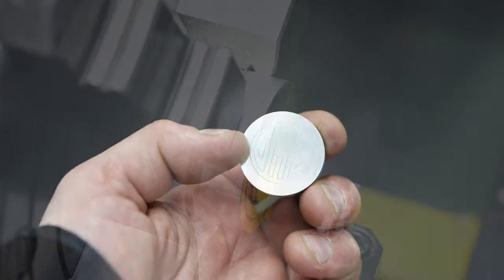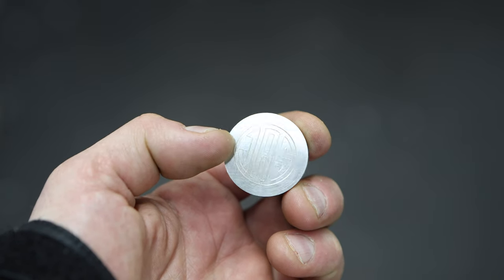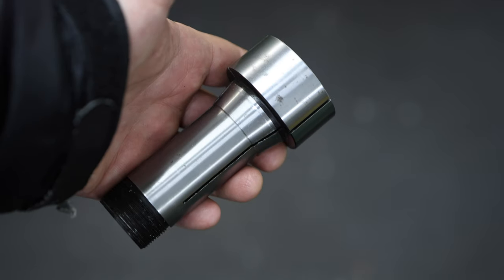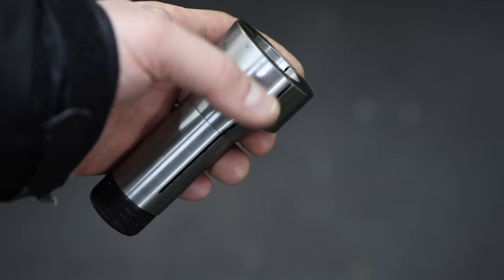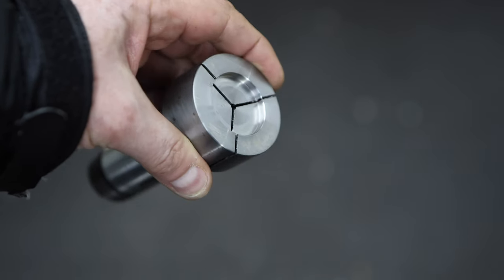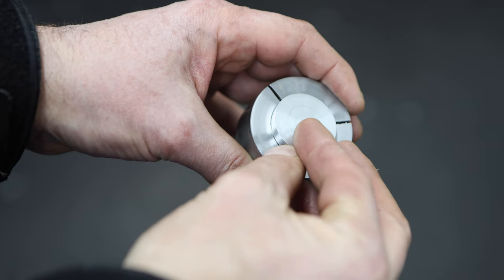That's our coin machined to size now but I do still need to face off the back of it and work holding is going to be a bit challenging here. So what I've done is I've taken one of these 5C step collets with a machinable head and I've machined a recess into that to the diameter that I need to hold the coin.